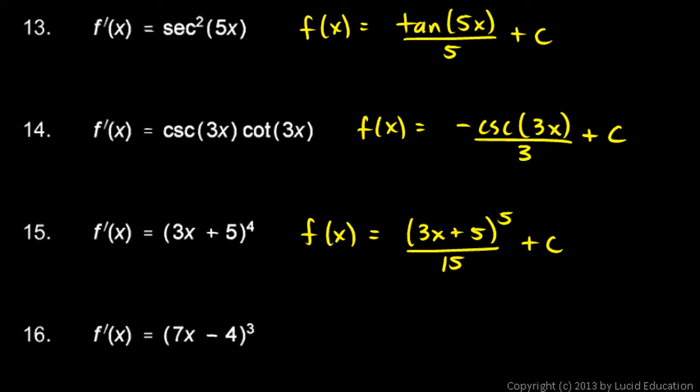And the next one, a similar thought process here. f of x is going to be 7x minus 4 to the fourth, and if we take the derivative of this, we'll have 4 times 7x minus 4 cubed times 7. So, we'll have a factor of 4 showing up from the power rule and a factor of 7 showing up from the chain rule, so that's a factor of 28 that's going to show up. So, let's get rid of that, so we do in fact end up with 7x minus 4 cubed, and of course, plus c.